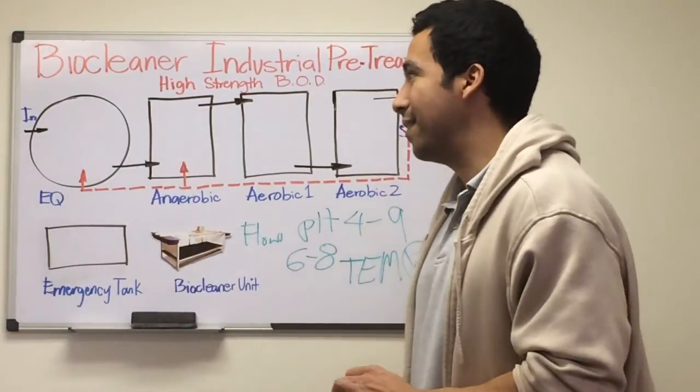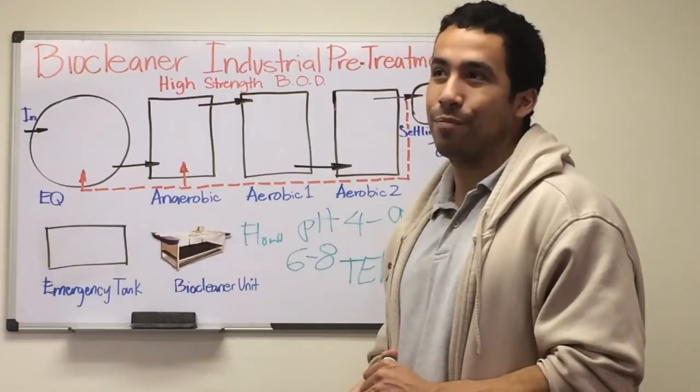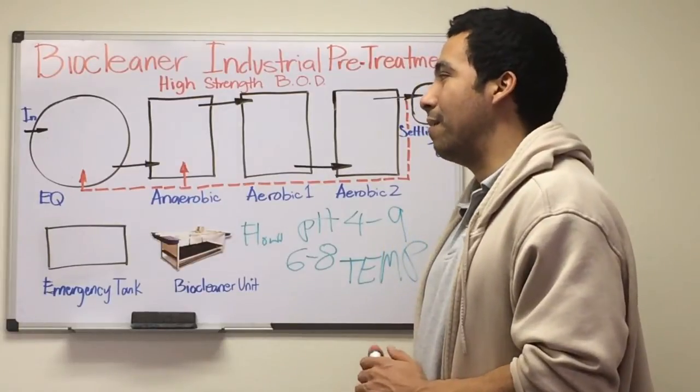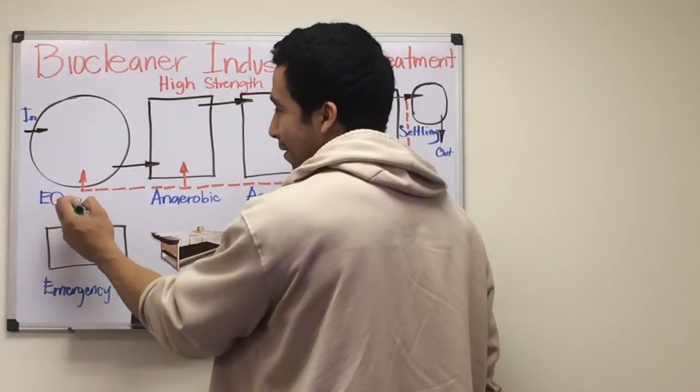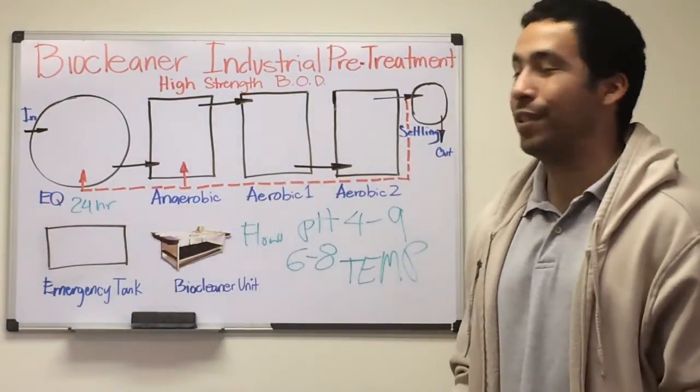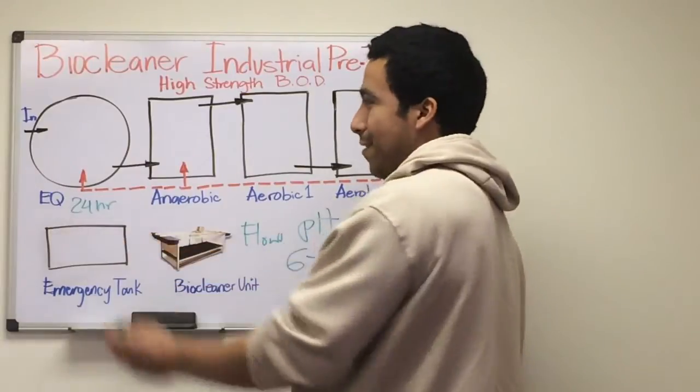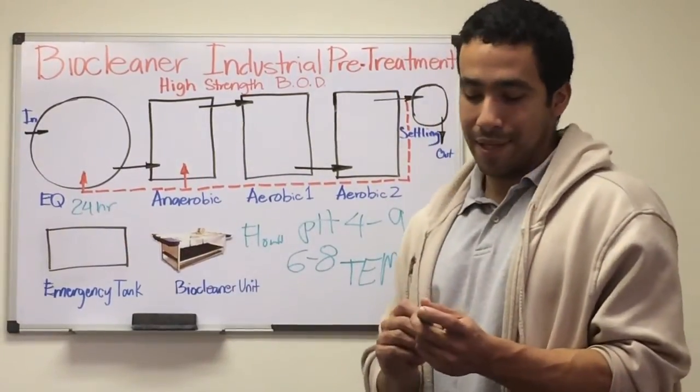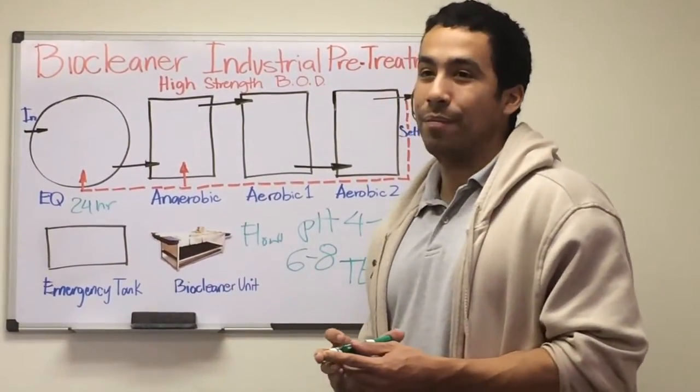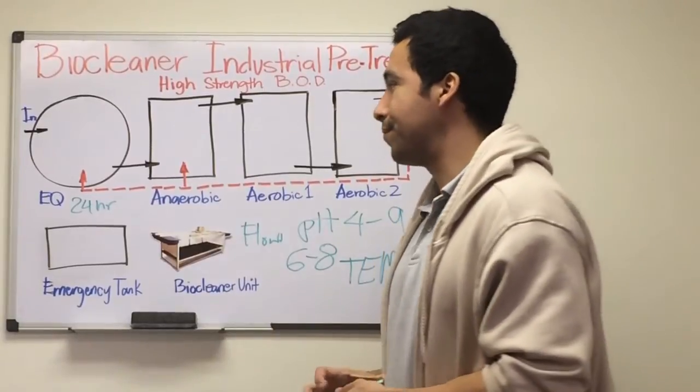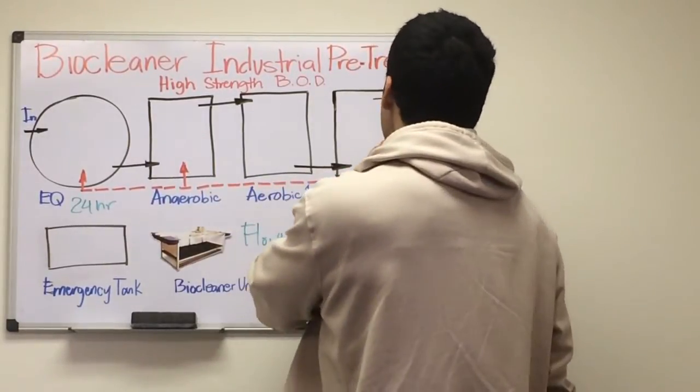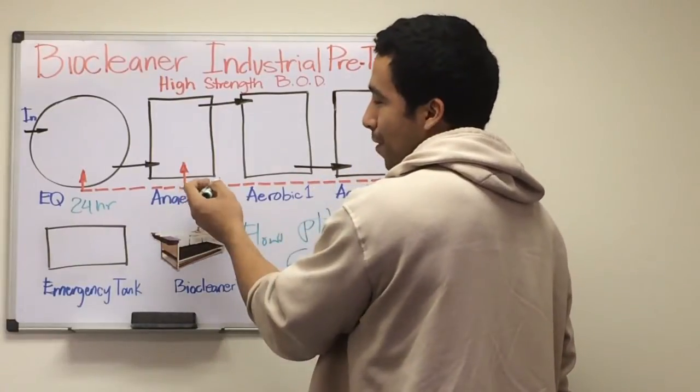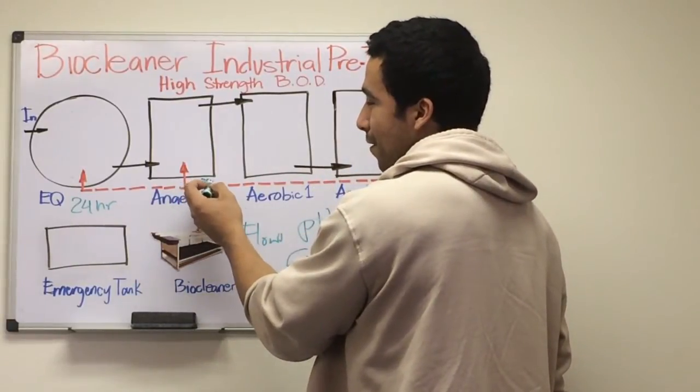To size an EQ tank depends on the industrial process and production schedule. Usually we consider a minimum of 24 hours of retention. However, if it's closed during the weekend, you may have to double it to 48 hours of retention time or even more depending on operation. Usually we do a return from 2% to 5% of the influent after the aerobic treatment.